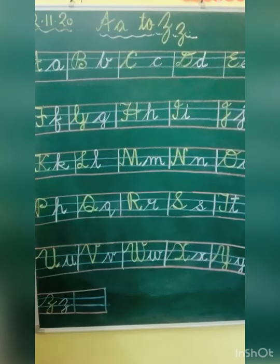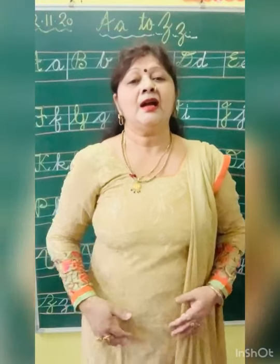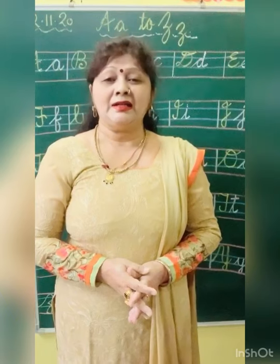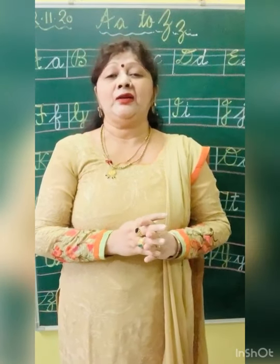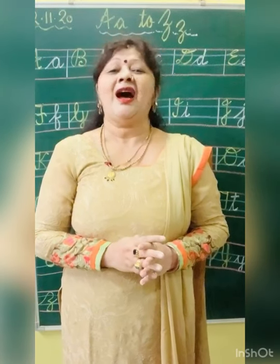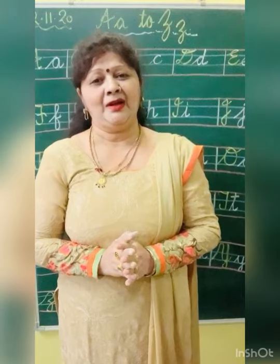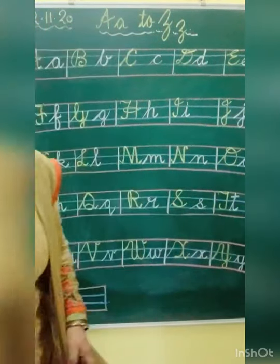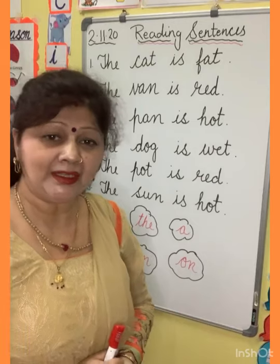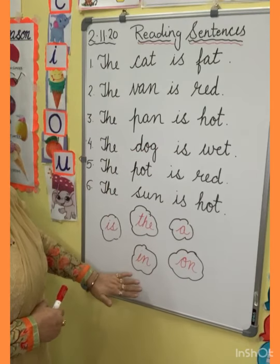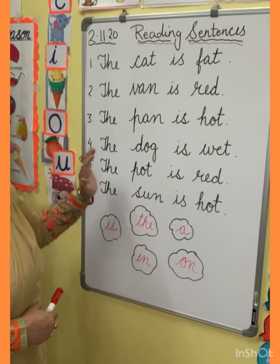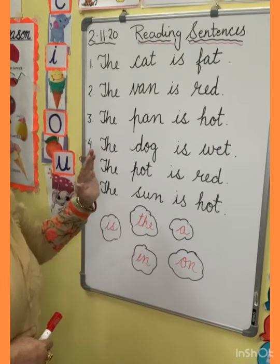Today we learned both capital and small cursive handwriting A to Z. See very carefully both the handwritings and do your work very properly and very neatly. After that we start today's reading. So children, now this is our reading part. Look at the board — today we start something new for reading. Ma'am has written some sentences, so today we start sentence reading. Very simple sentences ma'am has written here.